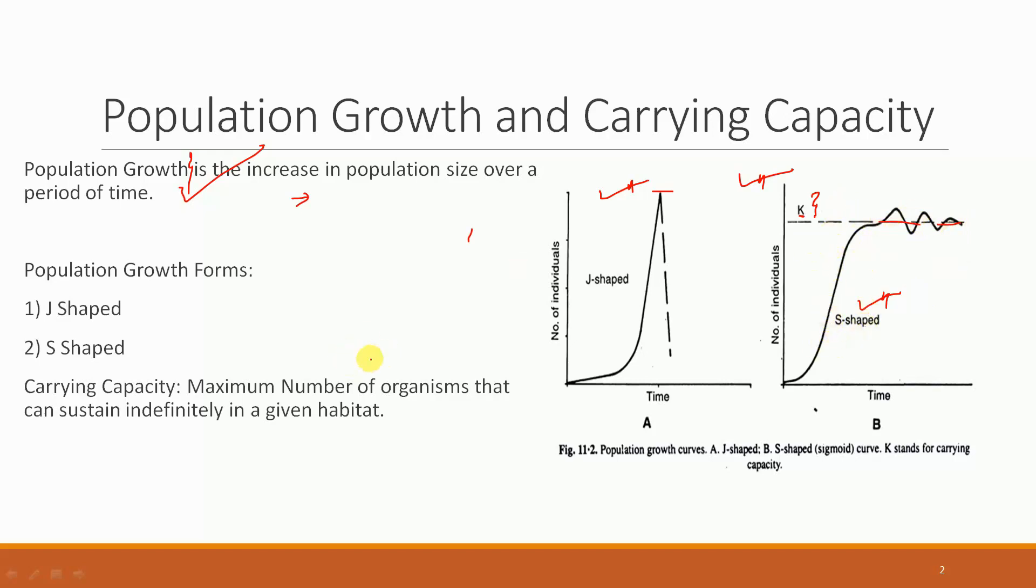Carrying capacity is the maximum number of organisms that can sustain indefinitely in a given habitat. Beyond this, the animals will not be able to sustain themselves because environmental resistance will be such. This one constant population or standing stock is what can be maintained.